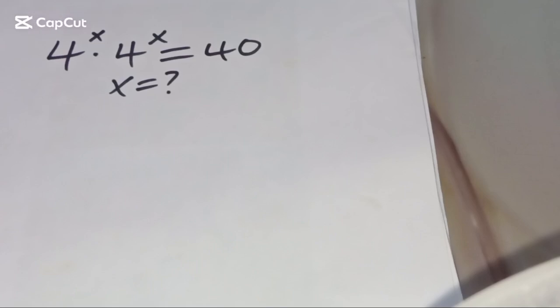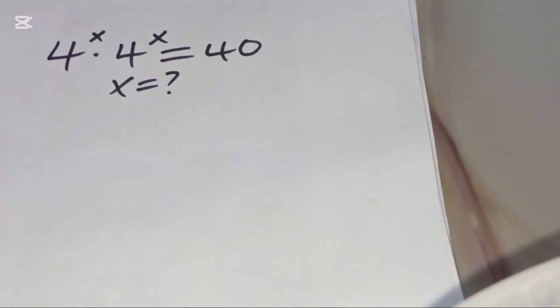Hello YouTube family, welcome back. Let's provide a solution given this nice exponential equation: 4 to the power x multiplied by 4 to the power x equals 40. What is the value of x?